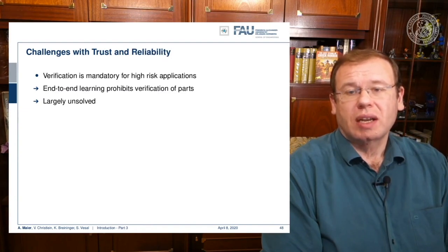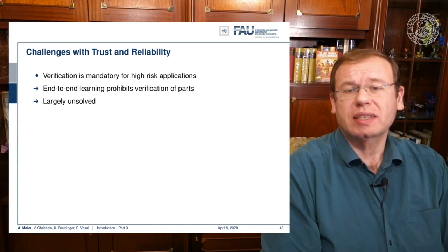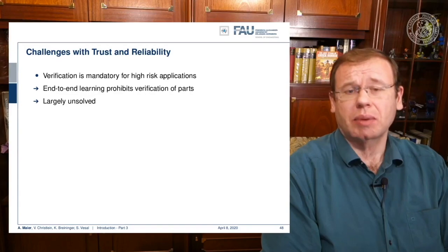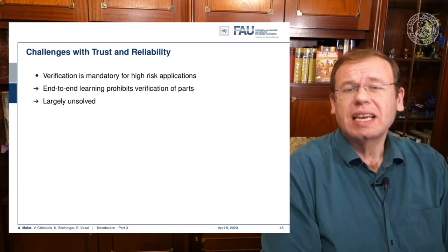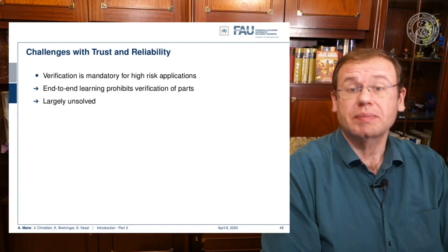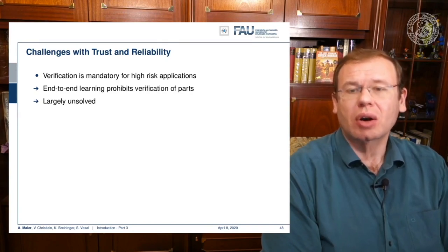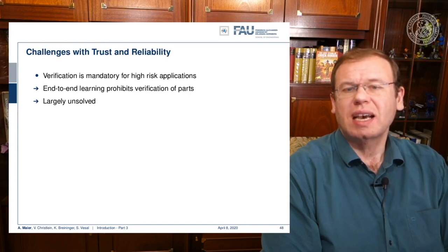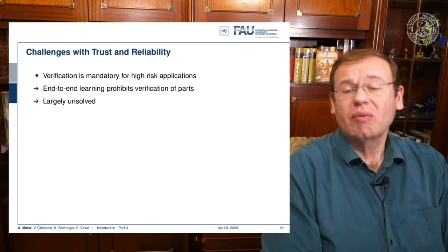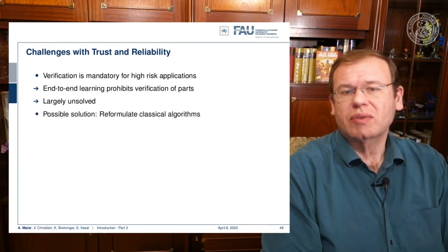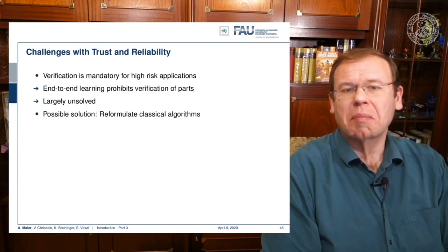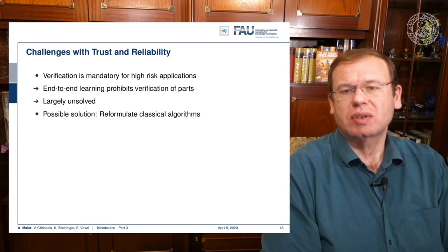There are also challenges with trust and reliability. Verification is mandatory for high-risk applications, and regulators can be very strict about those. Regulators pay disproportionate amounts of attention to that which generates press, and Tesla generates a lot of press. They really want to understand what's happening in those high-risk systems. End-to-end learning essentially inhibits us from identifying how the individual parts work, so it's very hard for regulators to tell what part does what and why the system actually works. We must admit that this is largely unsolved. Modular approaches based on classical algorithms may be one approach to solve these problems in the future.